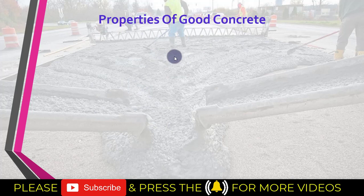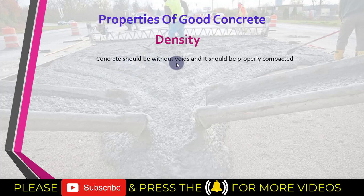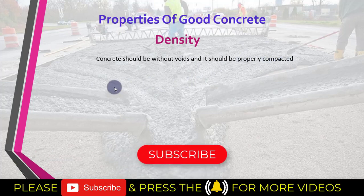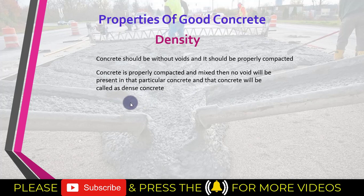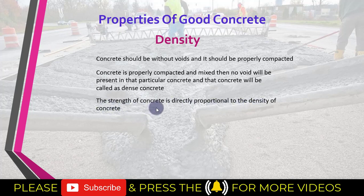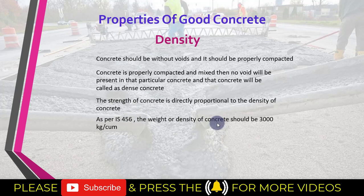The next property of a good quality concrete is density. By density, it means that the concrete should be without any voids and it should be properly compacted. If a concrete is properly compacted and mixed, there is very little chance that voids will be present and that concrete will be called dense concrete. The strength of concrete is directly proportional to the density of concrete — the denser the concrete, the more will be its strength. As per IS456, the weight or density of concrete should be 3000 kg per cubic meter.